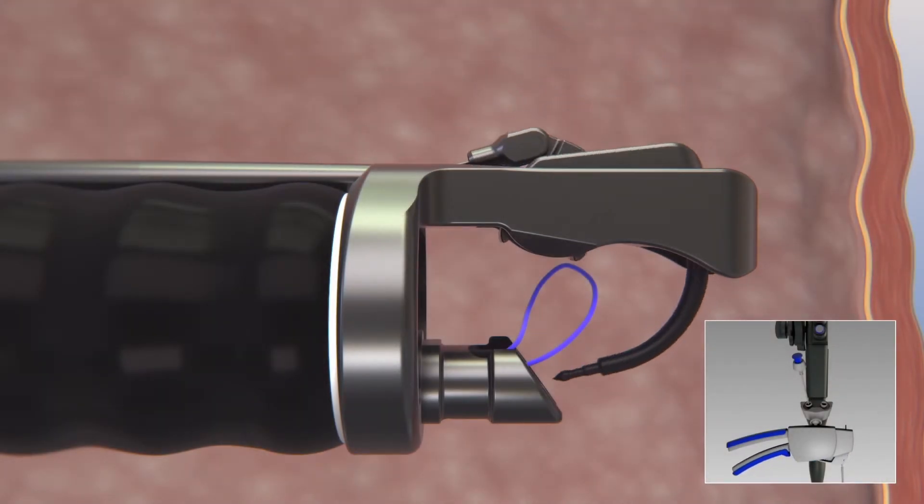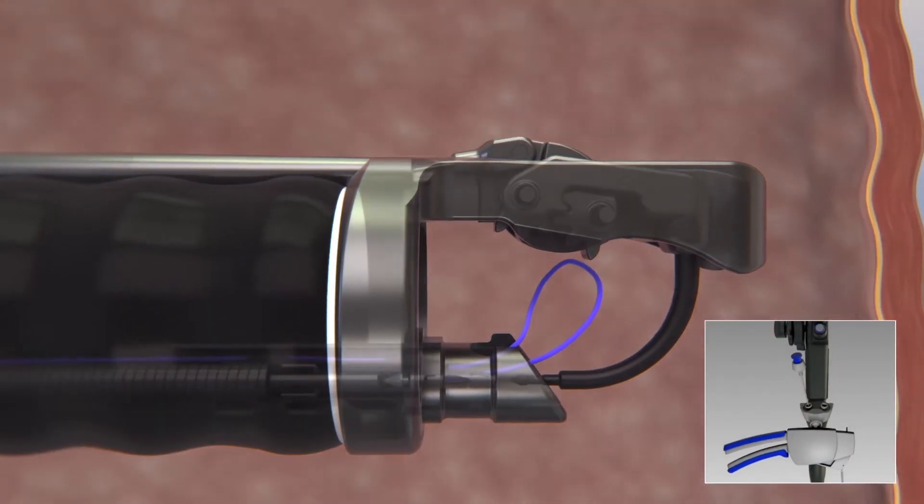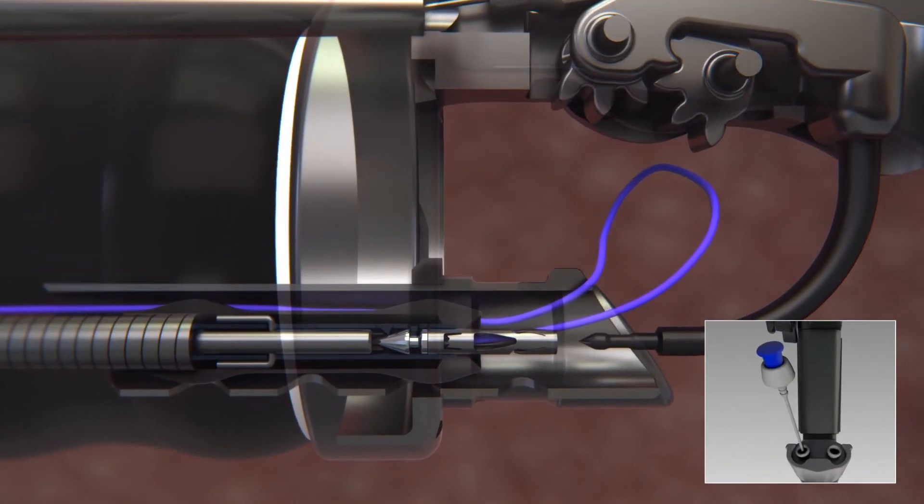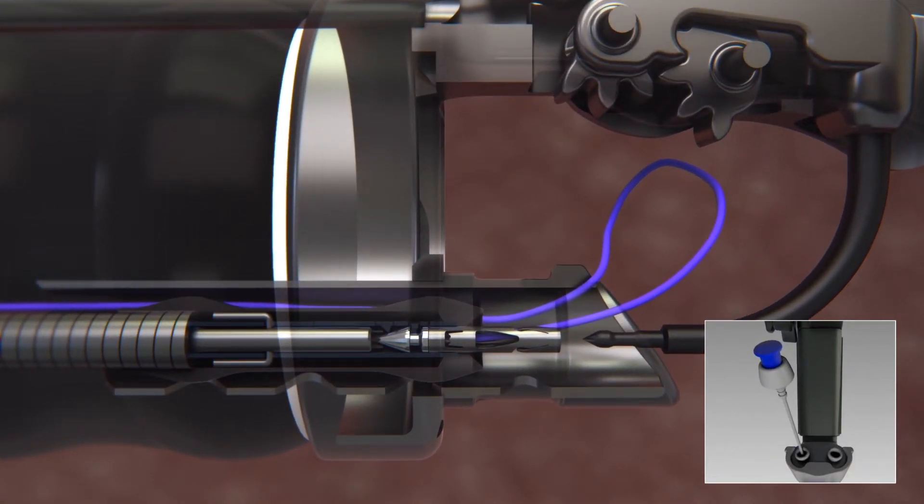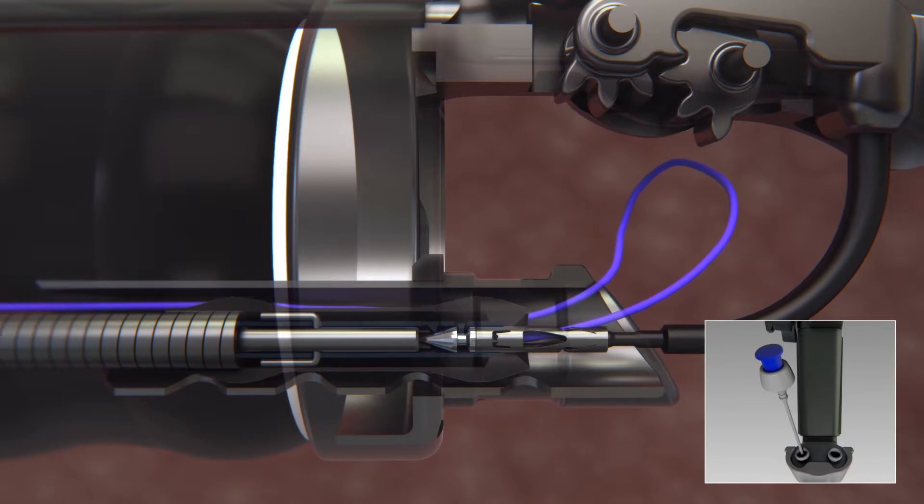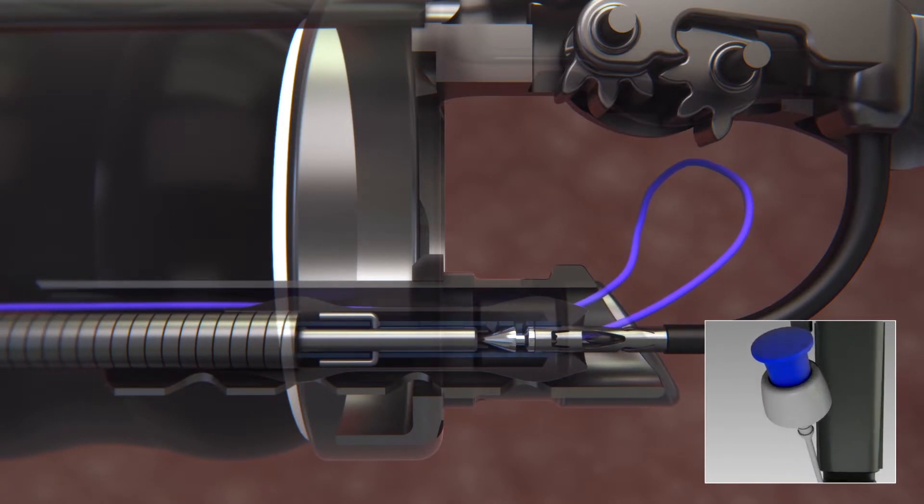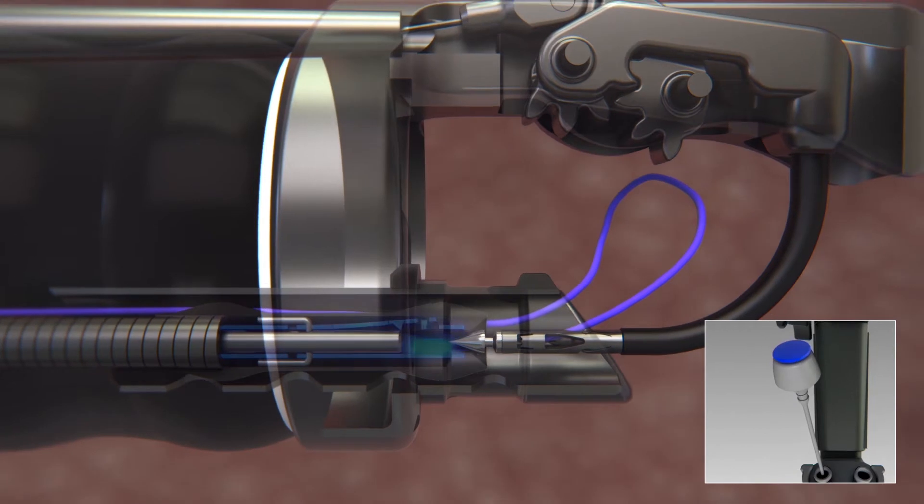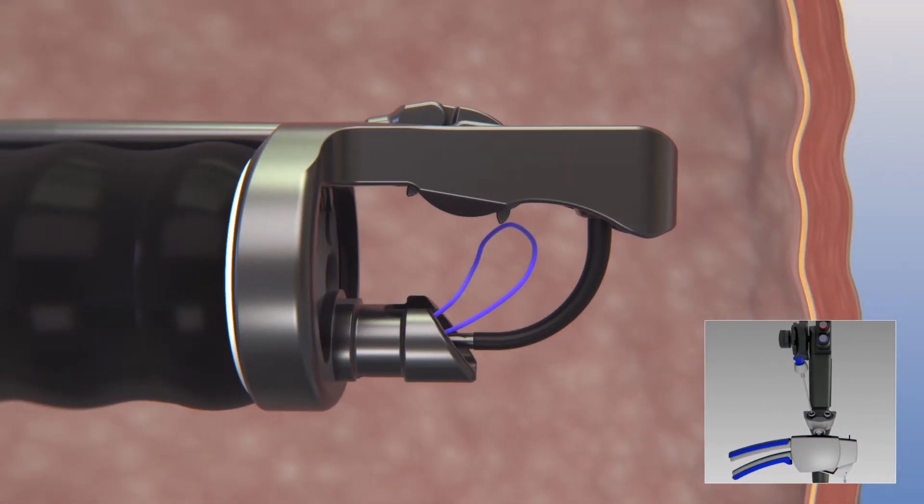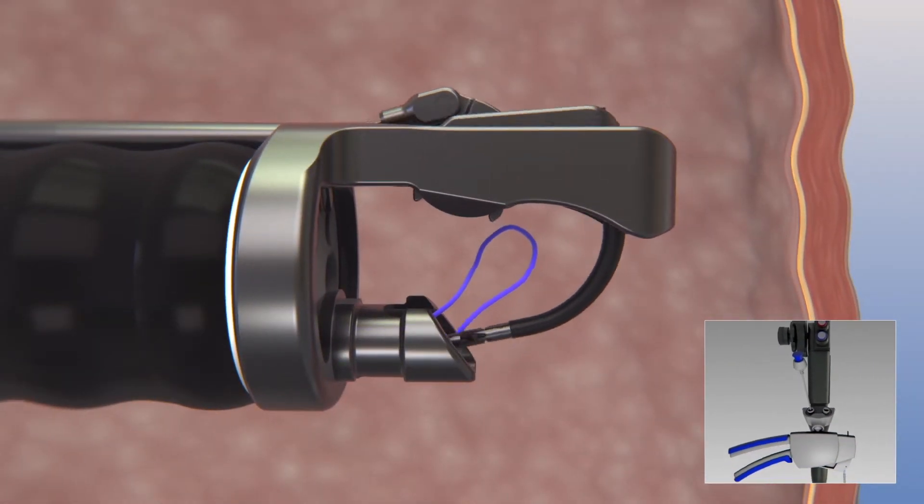Prepare to load the anchor by closing the overstitch handle. Advance the anchor exchange until the anchor clicks onto the needle driver and will not advance further. Press the blue button on the anchor exchange and pull back approximately 1 cm to disengage from the anchor. Open the overstitch handle.